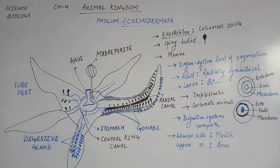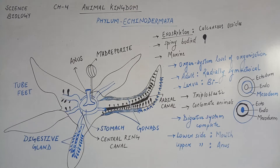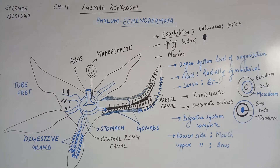लेकिन Echinodermata के जो Larva होते हैं, उनका अगर Dissection करें और उनको दो Parts में Divide करें तो उनकी Body Bilateral Symmetry show करेगी, Longitudinal Plane पर काटने से. अगर हम Longitudinal Plane में Organism को Divide करेंगे तो दो Equal Parts तो मिलेंगे, लेकिन वो Identical नहीं होंगे. लेकिन Adult Echinoderm का Dissection करने पर Radial Symmetry मिलेगी, Identical Two Parts मिलेंगे.